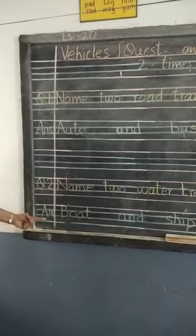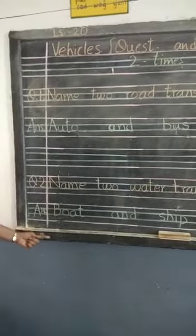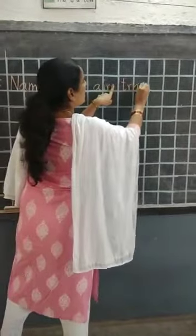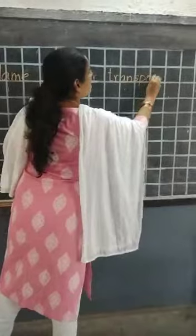Now we will write question number 3. After the answer, leave one line and write question number 3. We will finish road transport, we will finish water transport, now we will write air transport. Question number 3: N-A-M-E — Name, finger space, T-W-O — 2, finger space, A-I-R, finger space, T-R-A-N-S-P-O-R-T — Transport. The vehicles that move in the air.